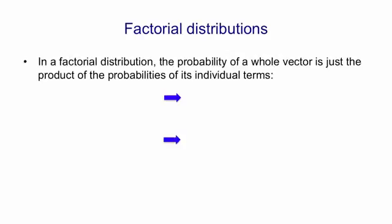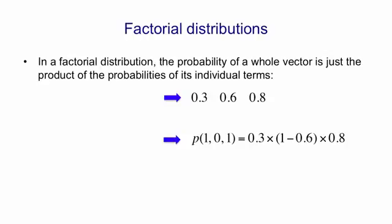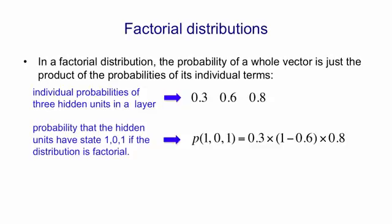So let's quickly look at what a factorial distribution is. In a factorial distribution, the probability of a whole vector is just the product of the probabilities of its individual terms. So suppose we have three hidden units in a layer, and they have probabilities of being on of 0.3, 0.6, and 0.8. If we want to compute the probability of the hidden layer having the state 1, 0, 1, we compute that by multiplying 0.3 by 1 minus 0.6 by 0.8. So the probability of a configuration of the hidden layer is just the product of the individual probabilities. That's why it's called factorial.